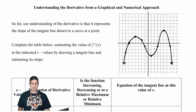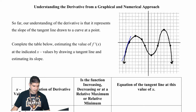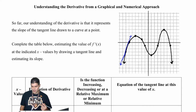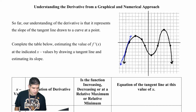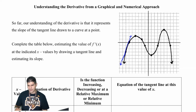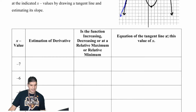Let me show you how I'm going to be estimating my derivative at negative 7. I'm going to sketch in a tangent line, trying to make it as straight as possible, and estimate what the slope of that line is. Looking at rise over run, it goes up 1, 2, 3 and then over 1, so I write down that f prime of negative 7 is approximately 3.